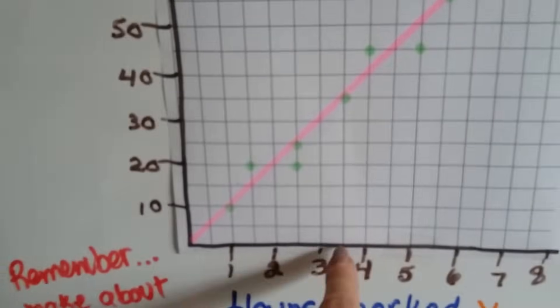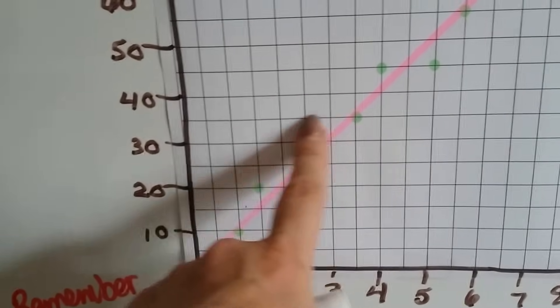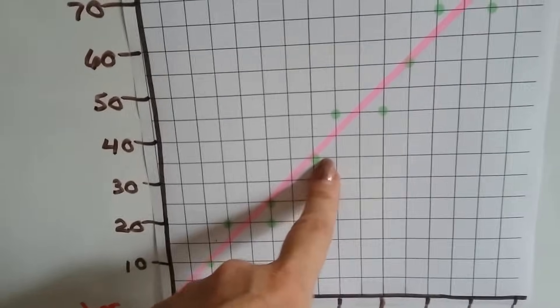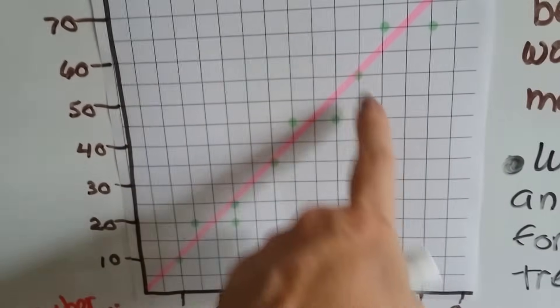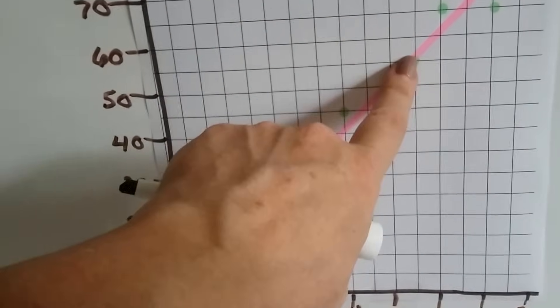And it goes through 3.5 and 35. It goes through, here's 3.5 in between the 3 and the 4. It goes through 3.5 and 35. That's in between 30 and 40. You want as many points as possible. So it might have even been better to use this point at 5.5 and 55.